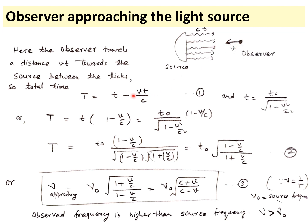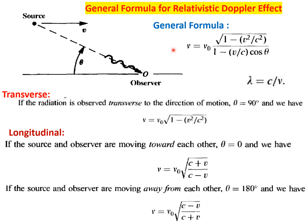For the approaching case, the time taken is T = t − vt/c, because the observer moves towards the source so light has less distance to cover. So T = t(1 − v/c). Using the time dilation formula and solving, we get T = t₀(1 − v/c) / √(1 − v²/c²). This gives the approaching case formula: ν = ν₀ · √[(1 + v/c)/(1 − v/c)]. Since the positive factor is in the numerator, ν will be greater than ν₀ — the apparent frequency exceeds the source frequency.